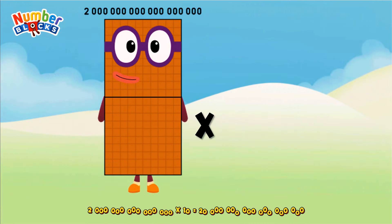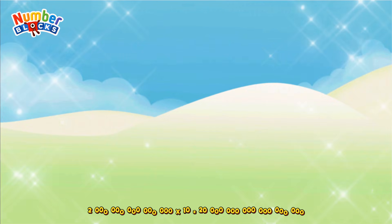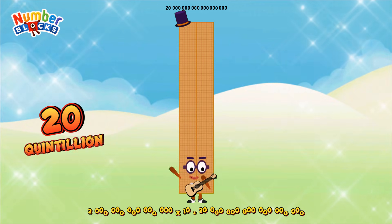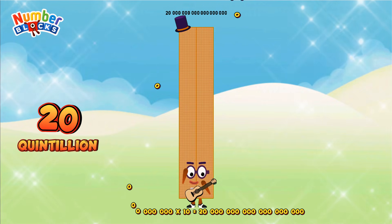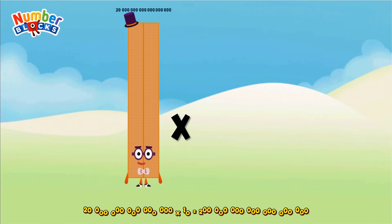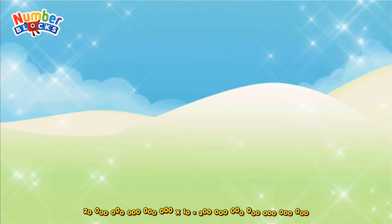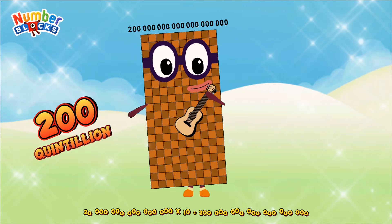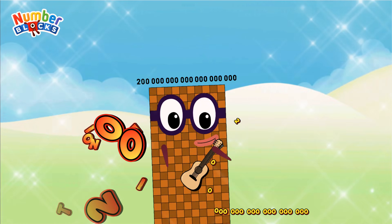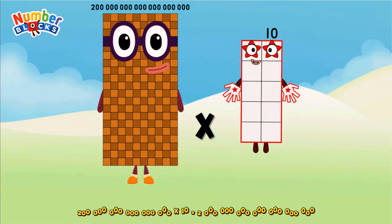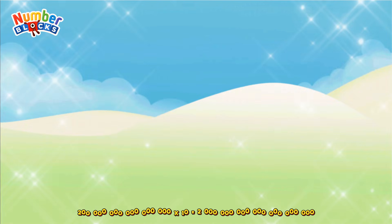2 quintillion, multiplied by 10, equals 20 quintillion. 20 quintillion, multiplied by 10, equals 200 quintillion. 200 quintillion, multiplied by 10, equals 2 sextillion.